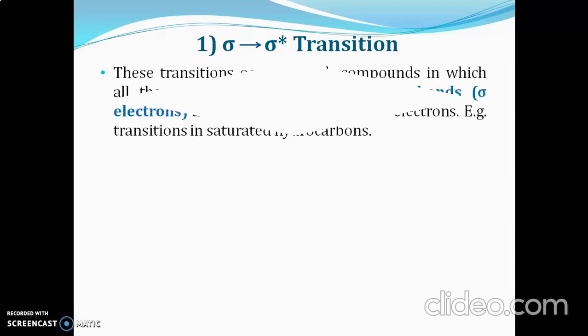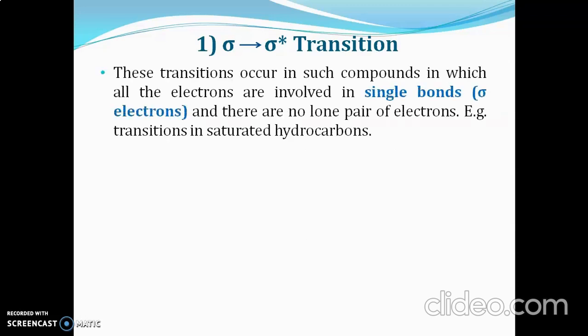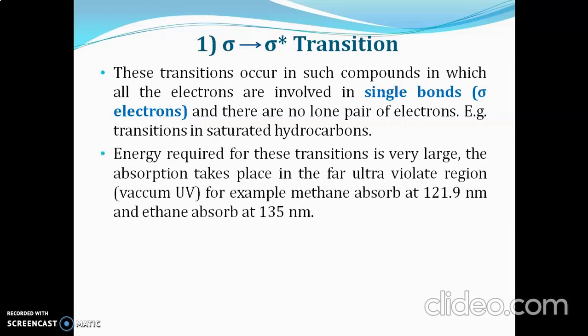In the sigma to sigma anti-bonding transition, sigma electrons are associated with sigma or saturated bonds. Compounds with only sigma bonds and no heteroatoms show this transition — for example, fully saturated hydrocarbons. The energy required is very large and it takes place only in the ultraviolet region, not in the UV-visible region.